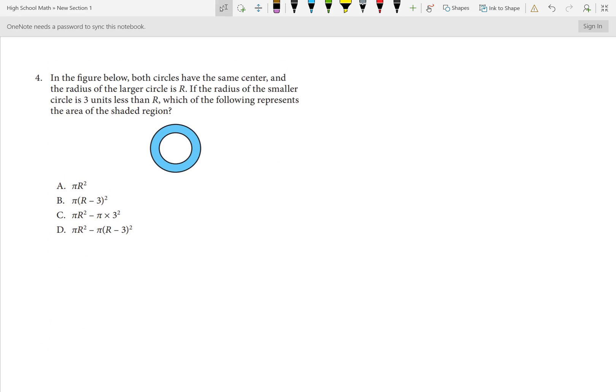Number 4, get the question sentence first: which of the following represents the area of the shaded region? In the figure below, both circles have the same center, and the radius of the larger circle is R. So the radius of our larger circle is R. If the radius of the smaller circle is 3 units less than R, which of the following represents the area of the shaded region?